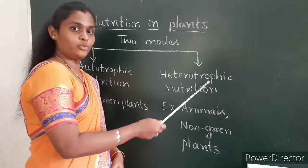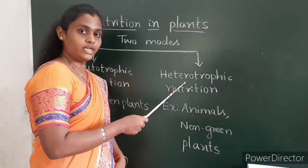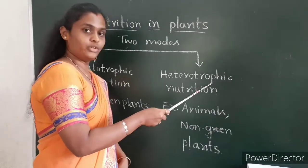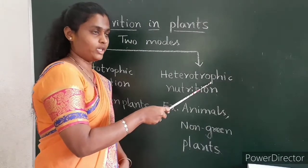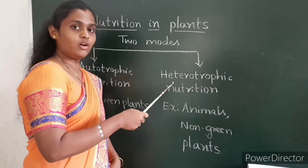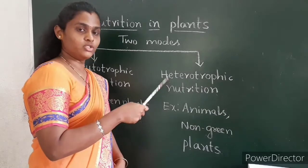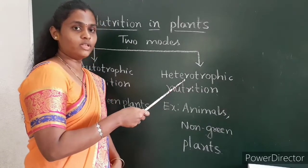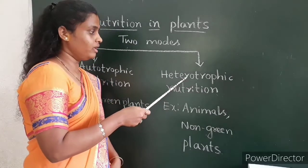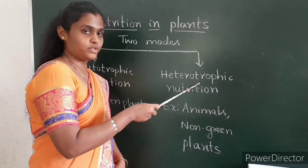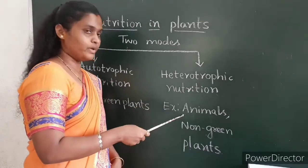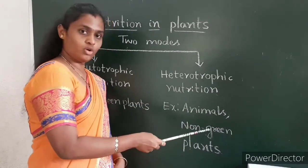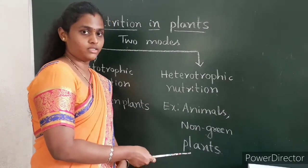Heterotrophic nutrition. The word 'hetero' means others, and 'trophic' means feeding. The living organisms which feed on others for their survival we call them heterotrophs. Examples are animals and non-green plants.